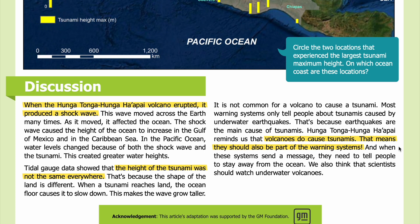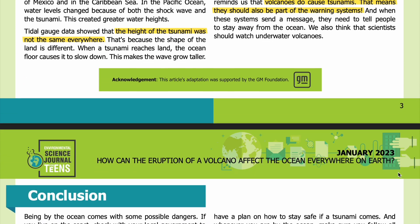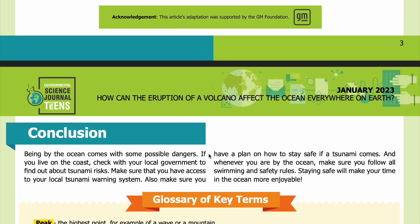Hunga Tonga-Hunga Ha'apai reminds us that volcanoes do cause tsunamis, so they should also be part of warning systems. When these systems send a message, they need to tell people to stay away from the ocean. Scientists should also monitor underwater volcanoes closely. If you live on the coast, check with your local government to find out about tsunami risks. Make sure you have access to your local tsunami warning system and have a plan to stay safe if a tsunami comes. Whenever you are by the ocean, follow all swimming and safety rules.